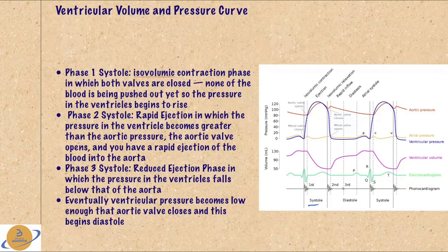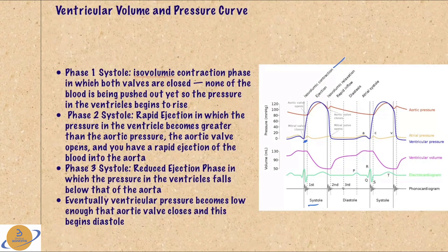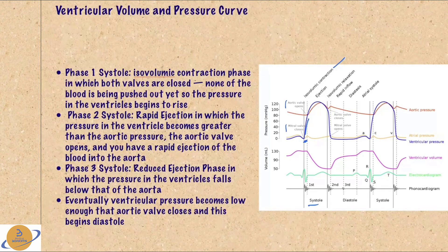Let's look at the ventricular pressure curve, starting with systole. Systole has three phases, the first of which is the isovolumic contraction phase. In this phase, the pressure is rising; however, the volume stays the same because both the mitral valve and the aortic valve are closed. The blood is in the ventricles and the volume is not changing. Eventually, the pressure builds up enough to where the aortic valve opens.